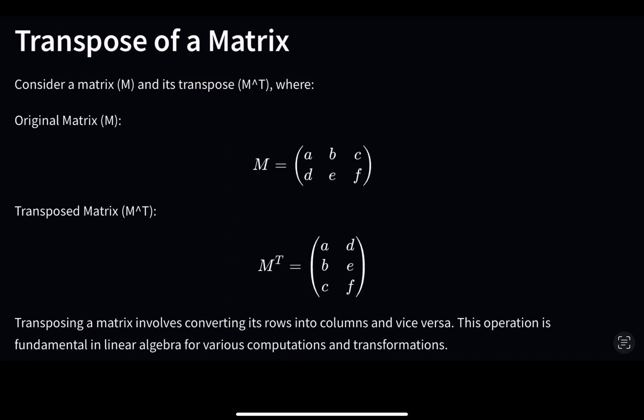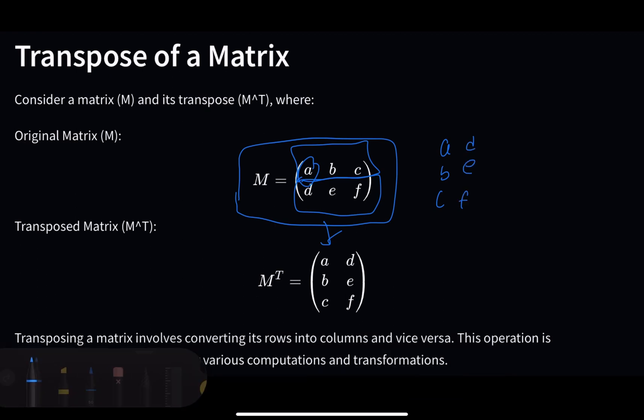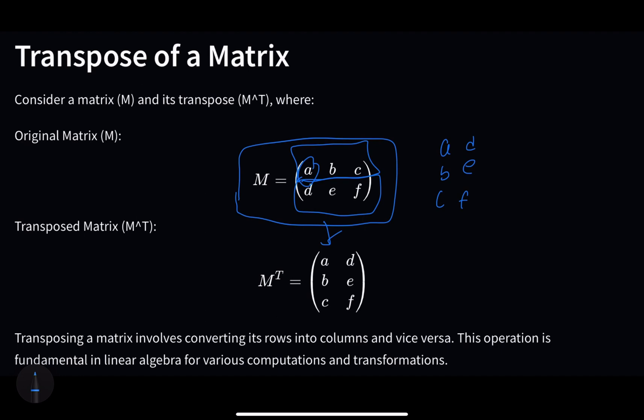To transpose a matrix, the goal is to take a matrix that looks like this and make it look like this. We're basically taking every value and turning it sideways. So we take A, B, C and make it look like A, B, C vertically, and then we take D, E, F and make it D, E, F vertically. That's what transposing a matrix means.